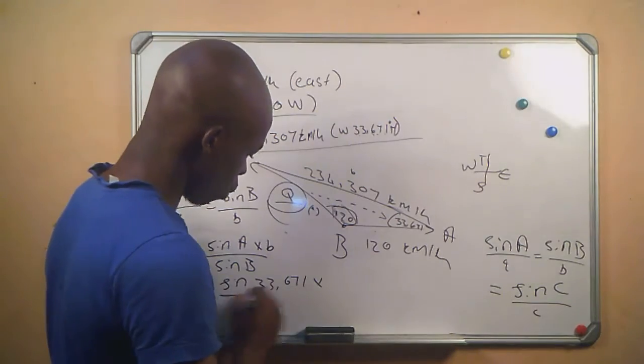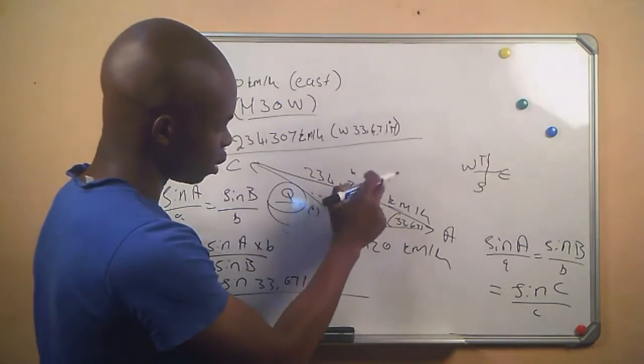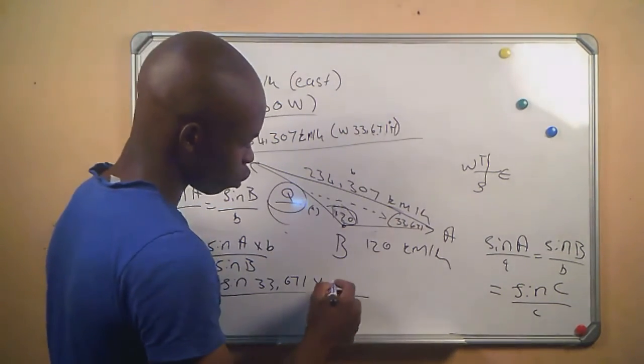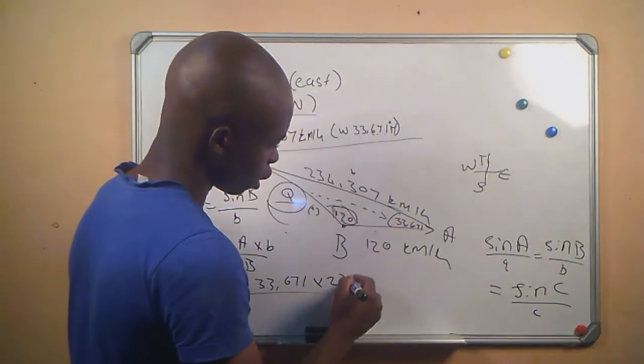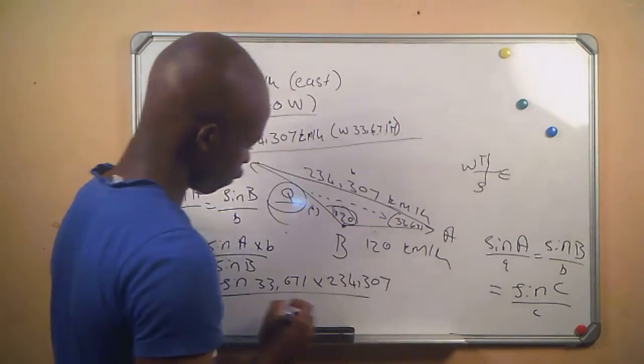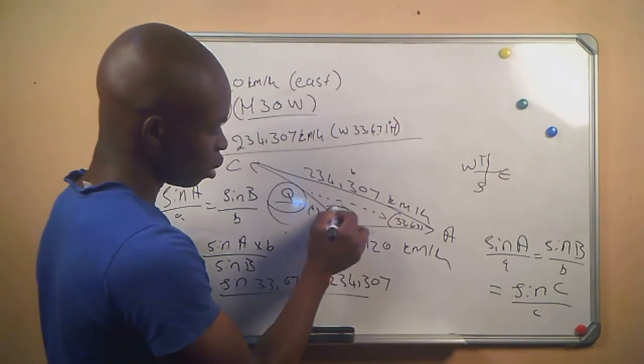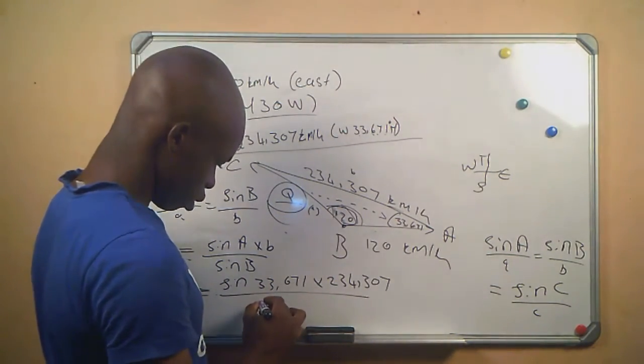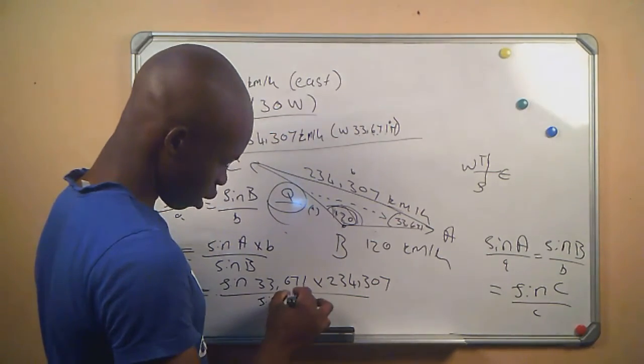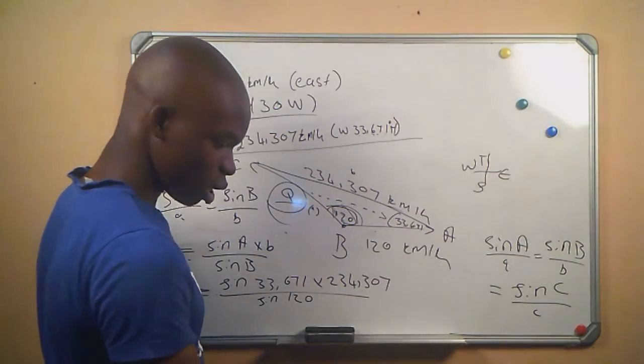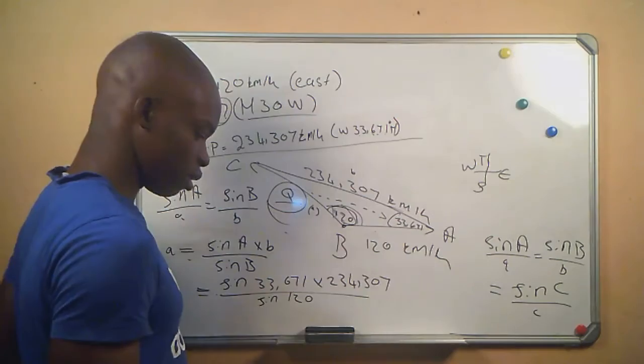And then we substitute sine a. Our a, this is 33.671, times our small b. Our small b, this is the value of our small b which is 234.307, divided by sine b. Our sine b, the angle of b, our sine b is 120.